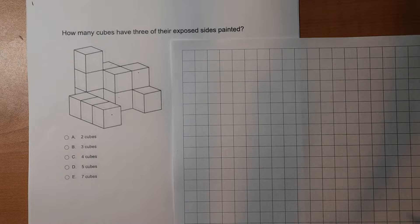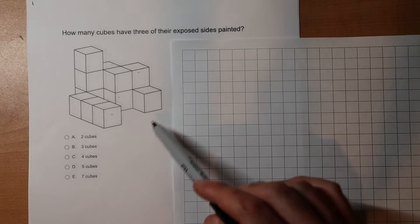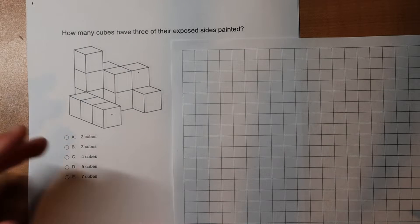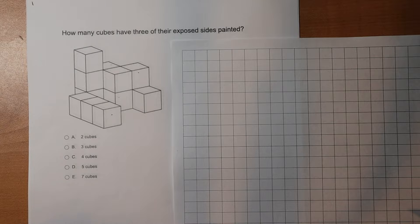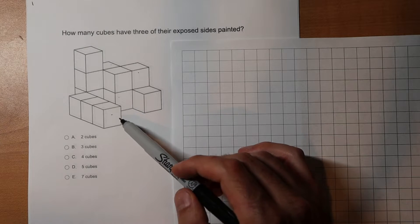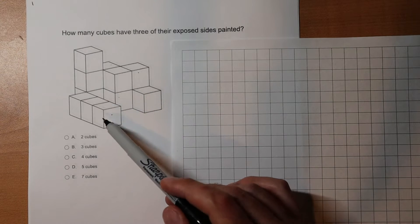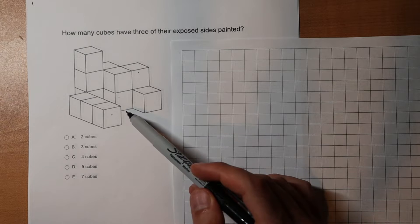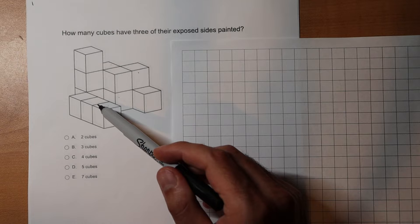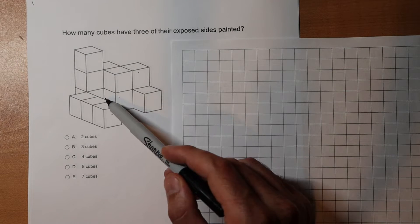For the cube counting section of the PAT, they're going to give us a diagram of a bunch of cubes and ask how many cubes have X number of their exposed sides painted — which really just means how many exposed sides they have that aren't touching another cube or covered by a different surface. For example, here we have one, two, three on the side, and four that's not touching another cube. This one we have three, for example.